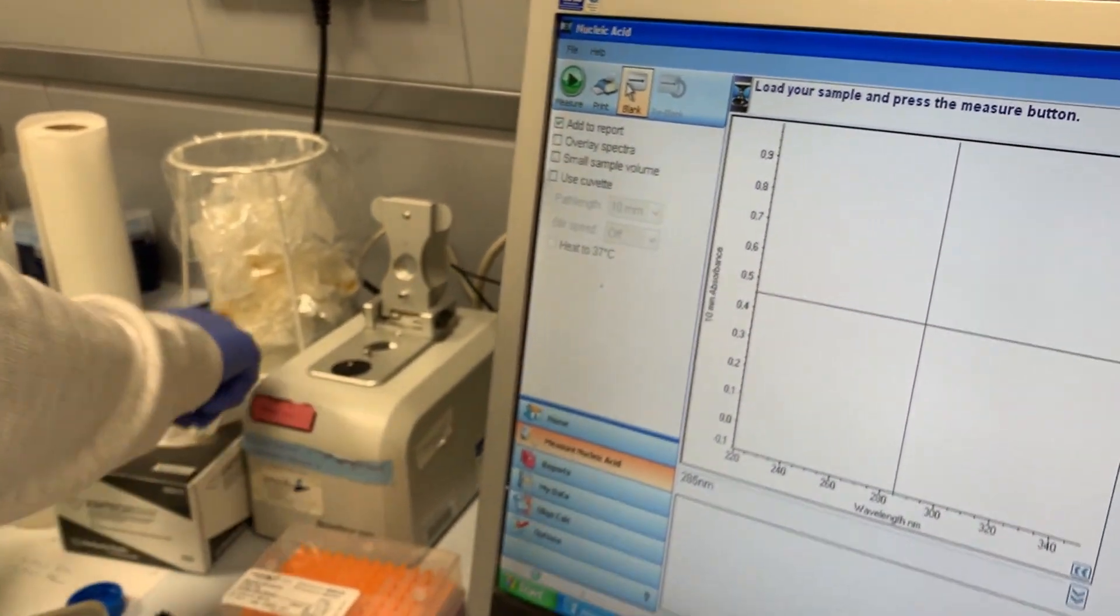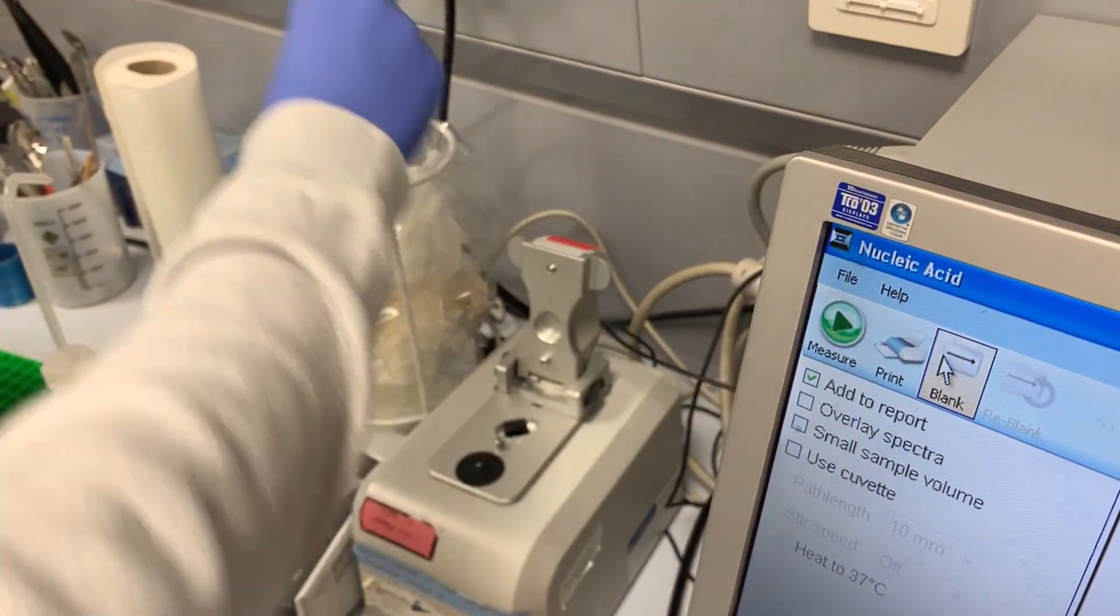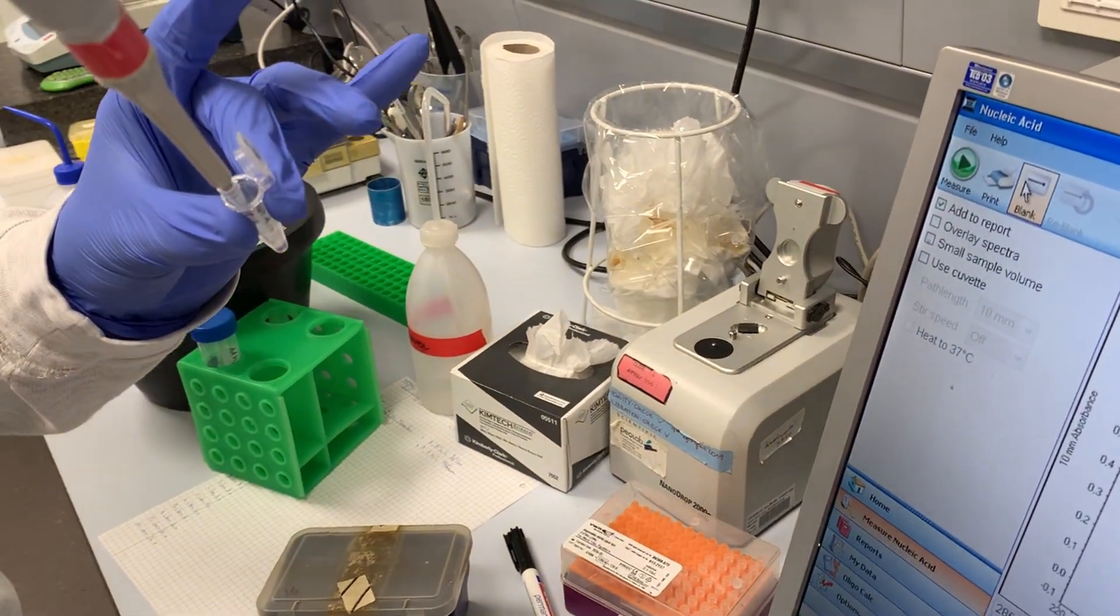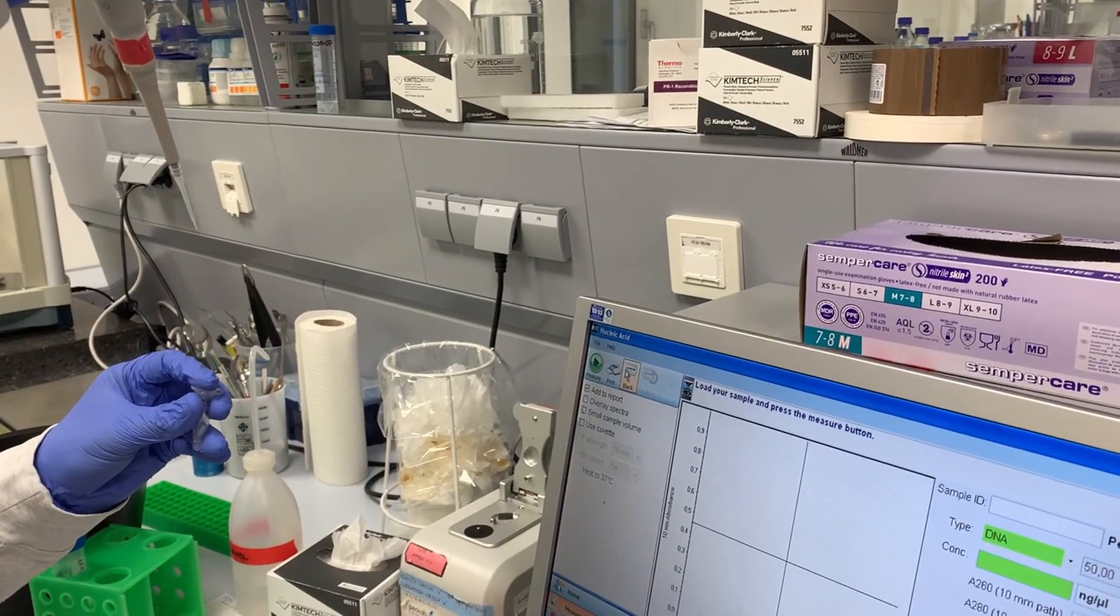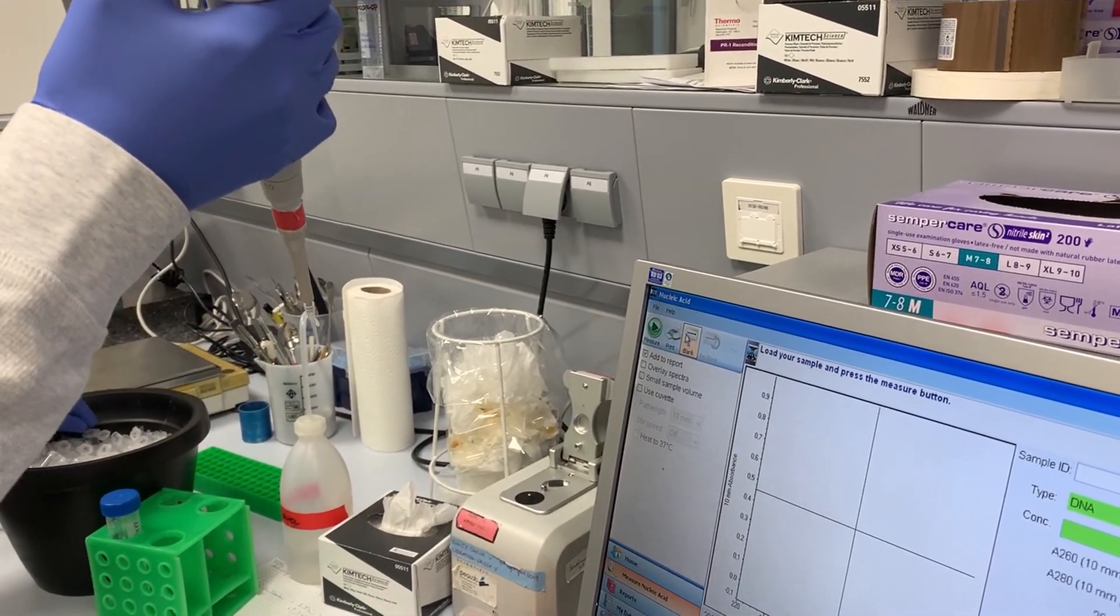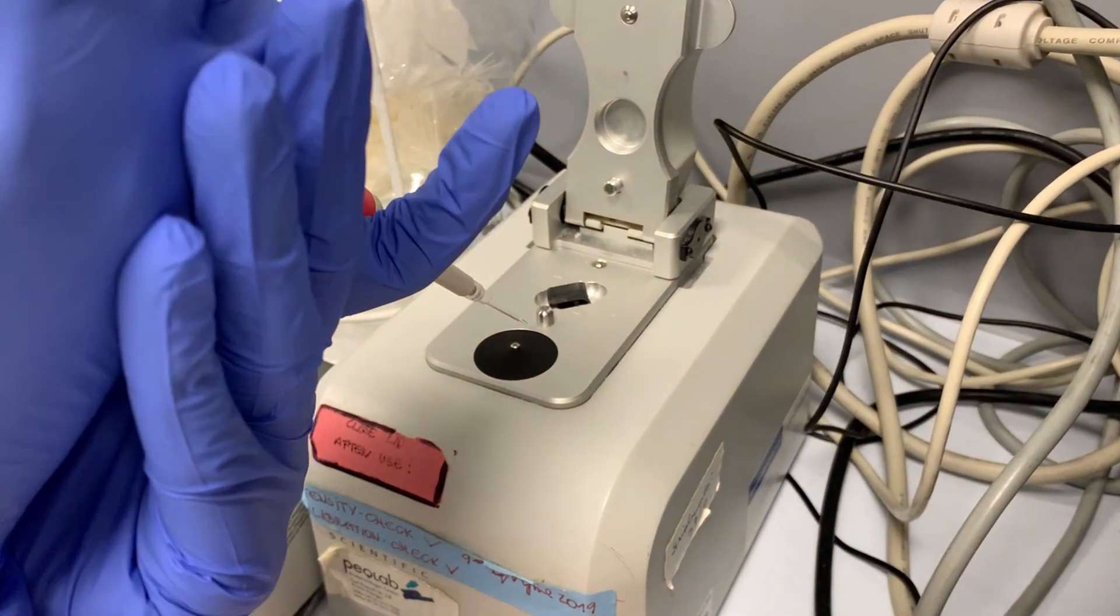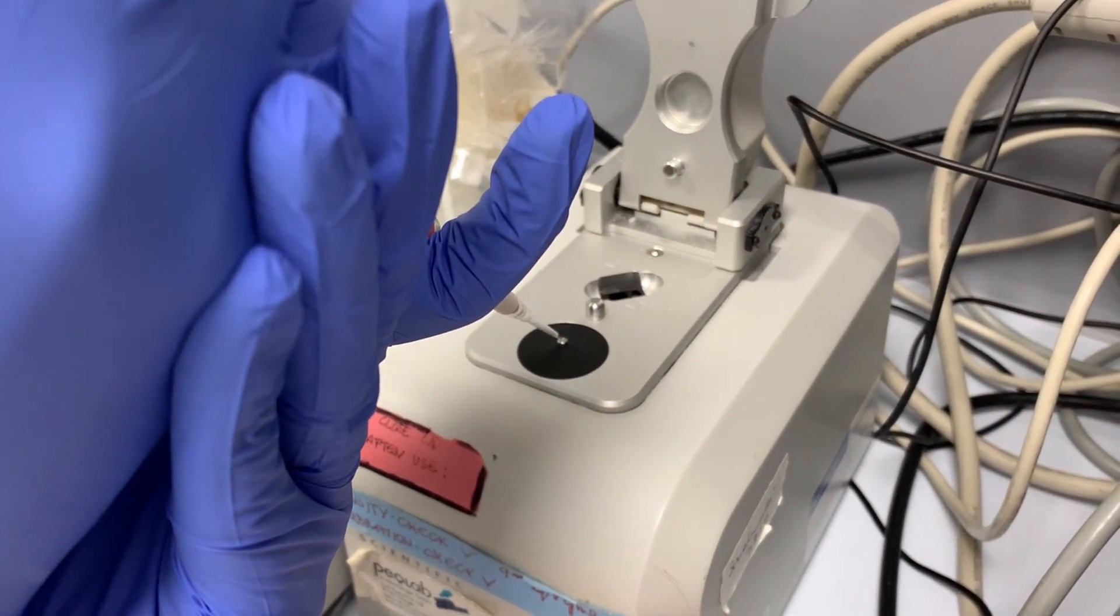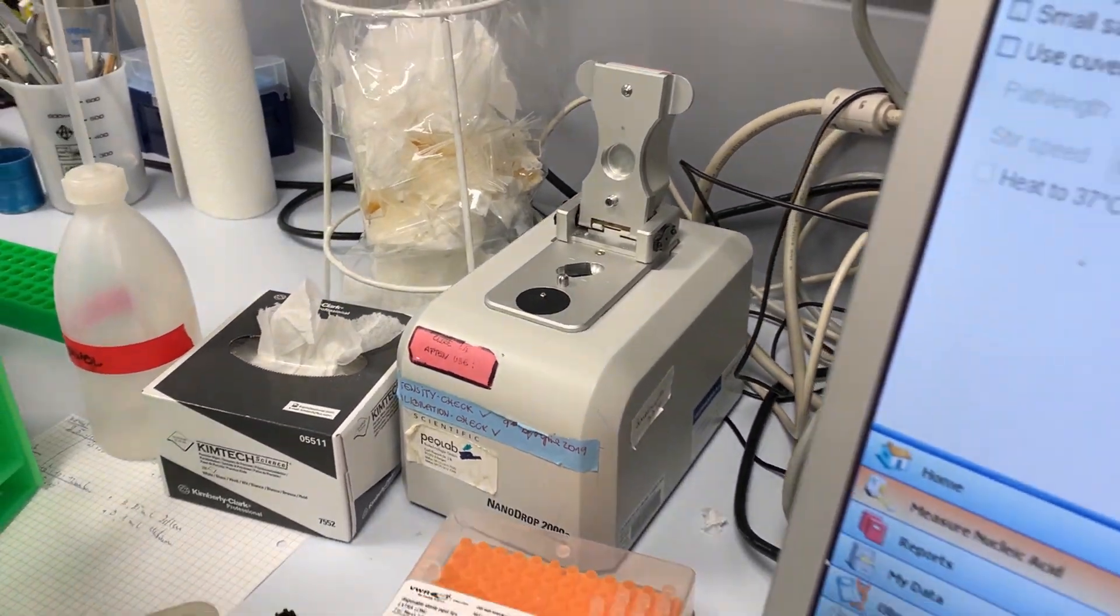Again, you have to clean the instrument. Then you repeat the same procedure. You use one microliter of your sample and again try to aim for the very center of the machine. And close the lid.